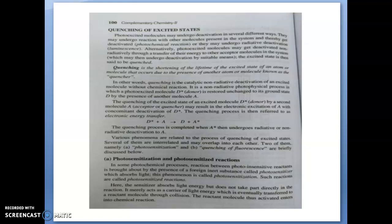What is happening in a photosensitized reaction? It is the photochemical process — a reaction between a photo-insensitive reactant. The photochemical reaction is happening in a molecule, but that molecule cannot absorb light. That is why it is termed as a photo-insensitized molecule. The reaction is initiated by the presence of a foreign inert substance. This phenomenon is called photosensitization.